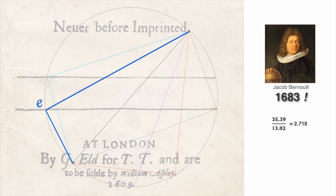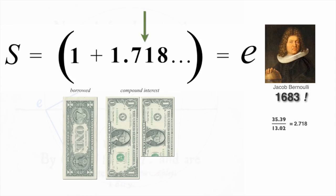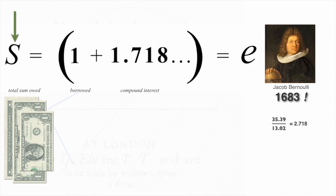Jacob Bernoulli in 1683 was studying a problem we all can relate to, money and compound interest. And he came up with a simple equation. It's the same formula used by banks today to calculate how much we owe on our credit card bill. Essentially it's this: 1 is the amount that we borrowed, plus 1.718 is the maximum possible compound interest if it's calculated continuously. Total is E, or 2.718 dollars, which we owe the bank.